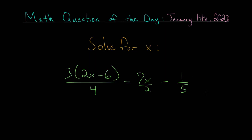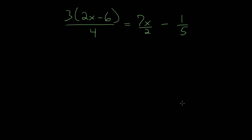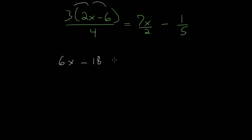Go ahead and pause the video and see if you can solve this for yourself. Now, assuming you gave this your own attempt, let's make a little room. We want to solve for x, and there are many different ways to approach this. We can start by getting rid of the parentheses by distributing the 3, or we can start by getting rid of the fractions. Personally, I like to get rid of parentheses first. Distributing the 3 to the numerator on the left-hand side gives us 3 times 2x which is 6x, and 3 times negative 6 is negative 18, all divided by 4. On the right we have 7x over 2 minus one fifth.